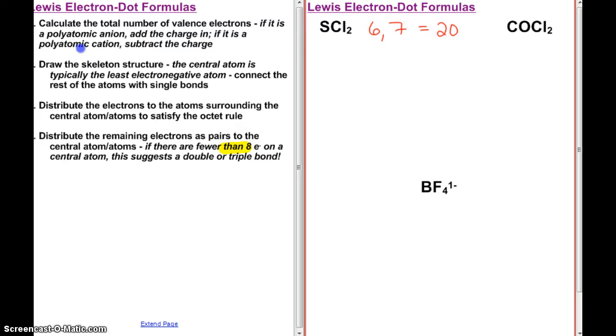If I look at COCl2, 4 from carbon, 6 from oxygen, and 7 and 7, so we should end up with 24 valence electrons here.